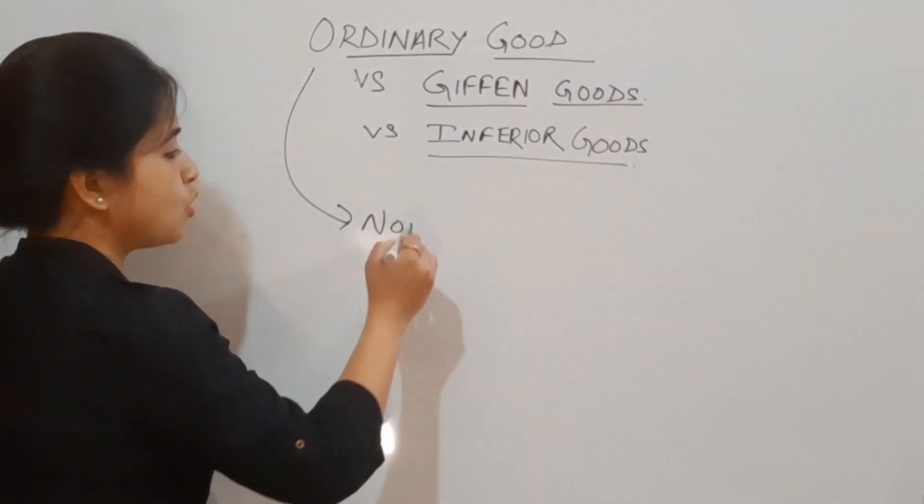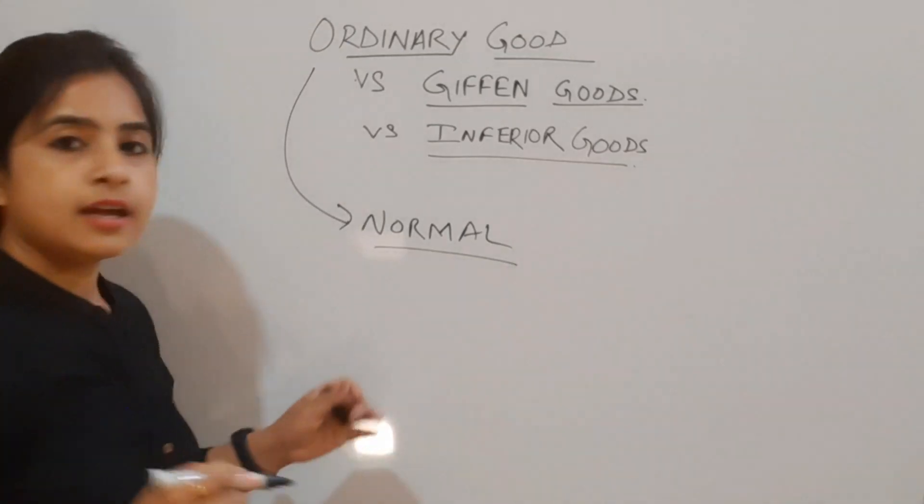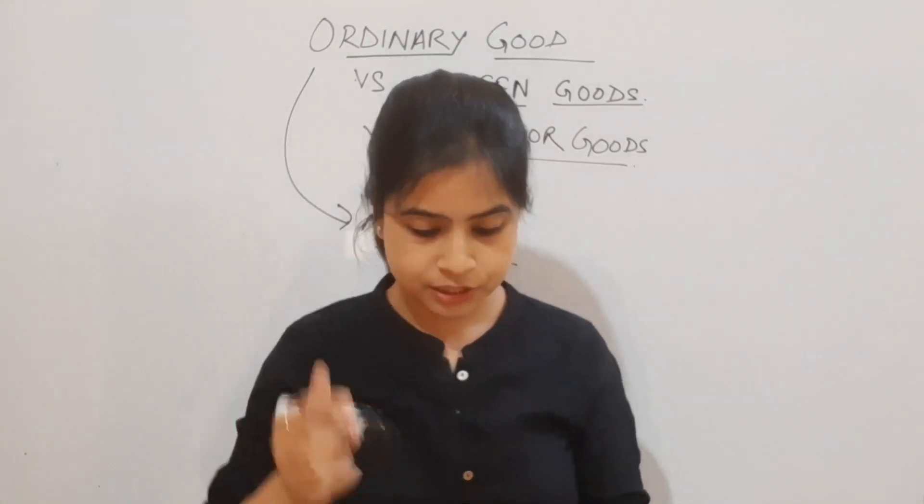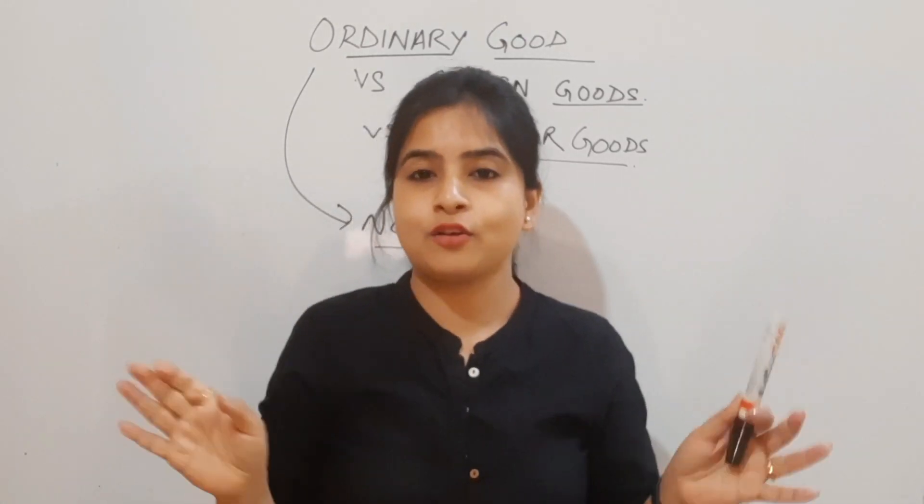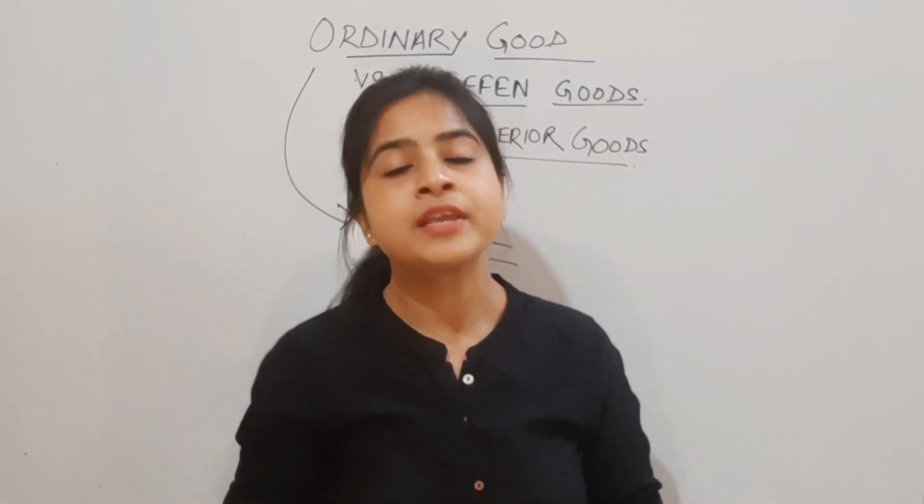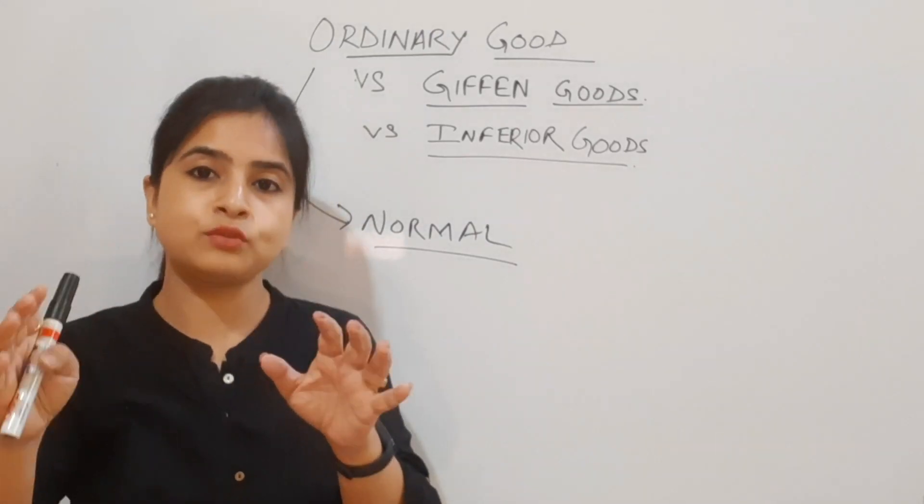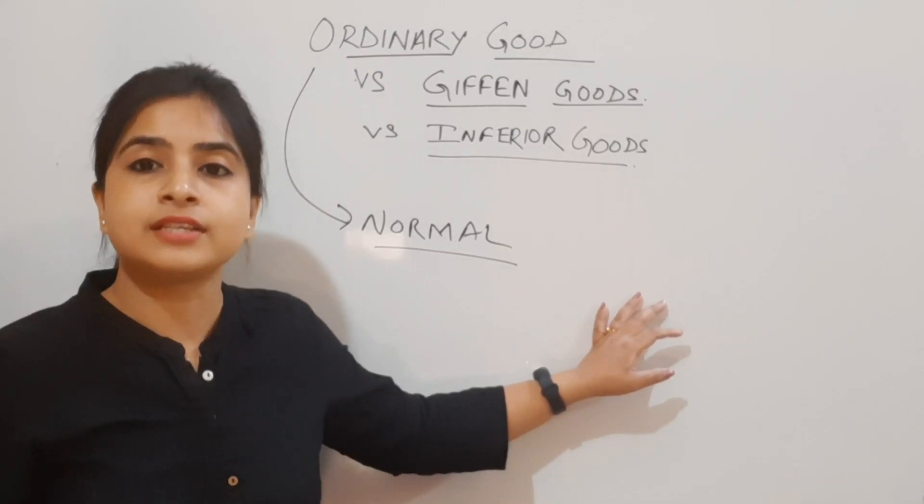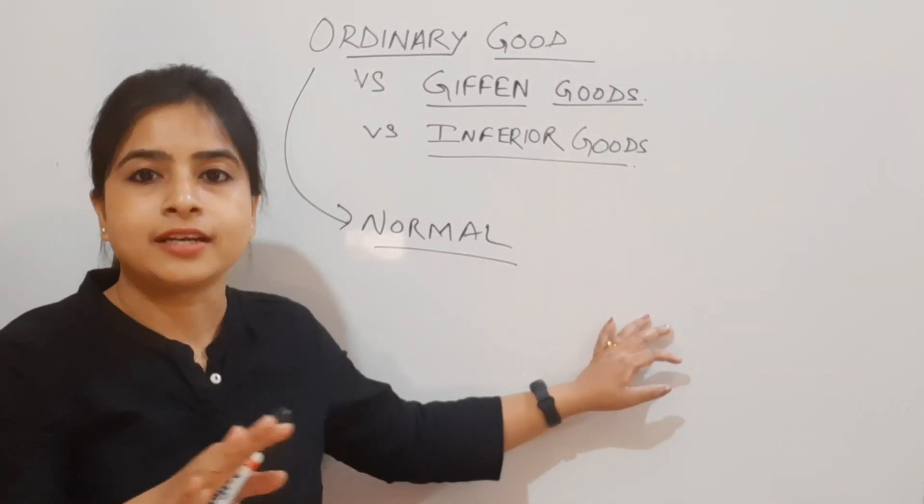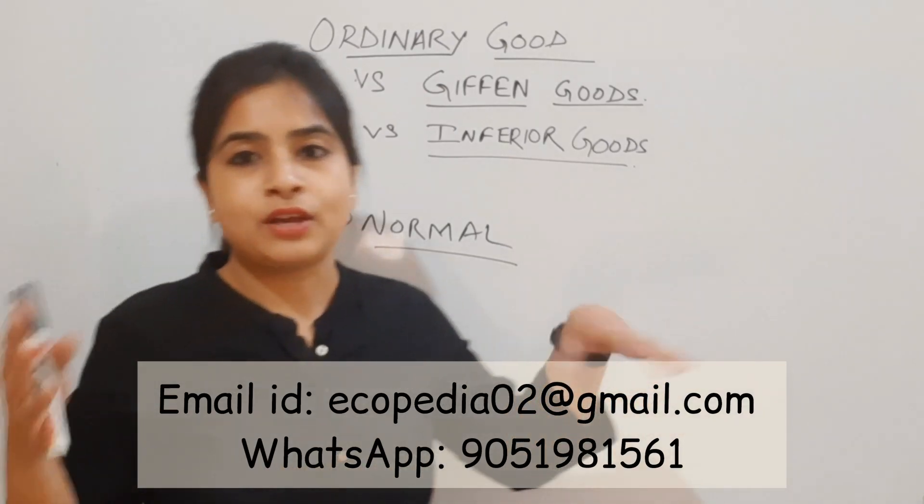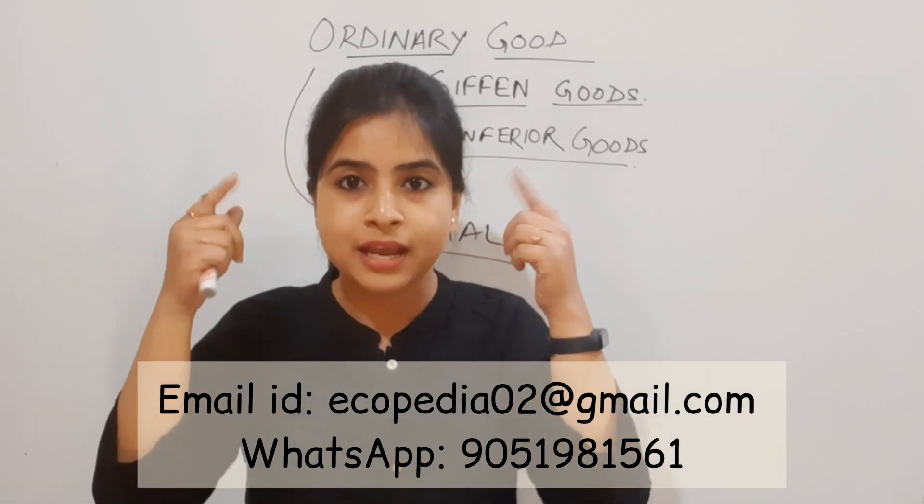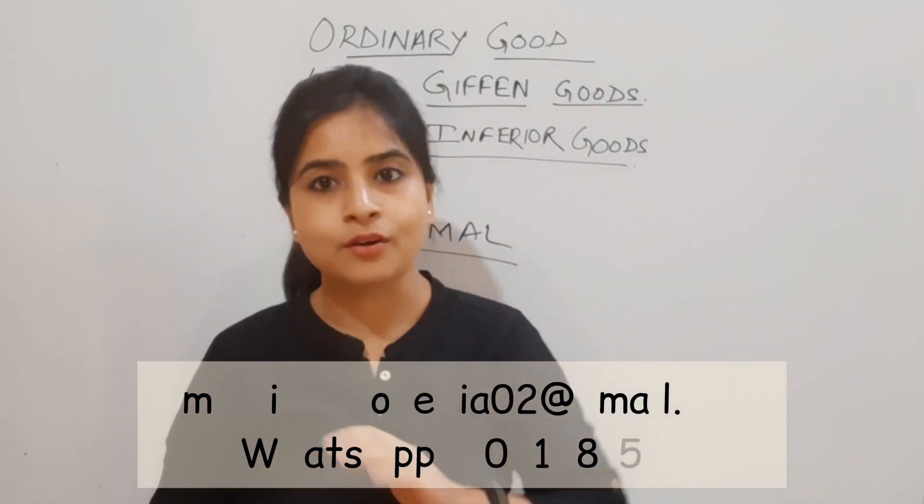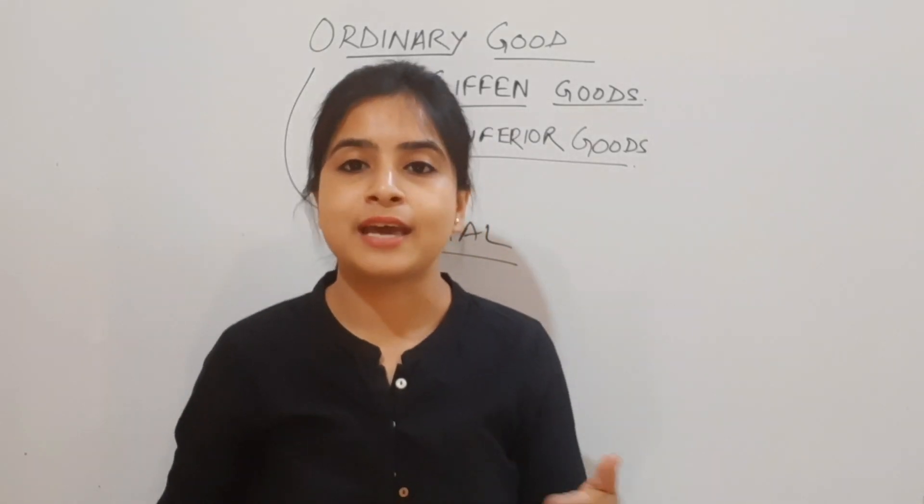I'll be talking first about ordinary goods, also known as normal goods. To understand the concept, I'll use some notation. There won't be a lot of notations, just a few. I'll also take help of a diagram because when we see a picture, the brain remembers it more precisely.